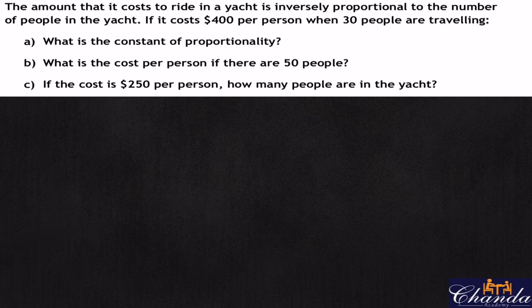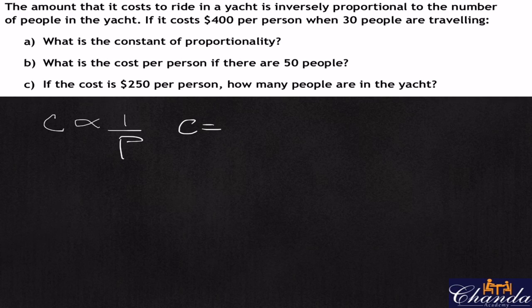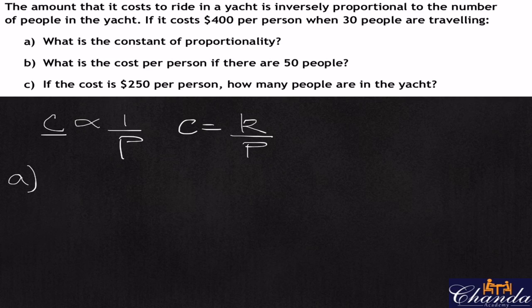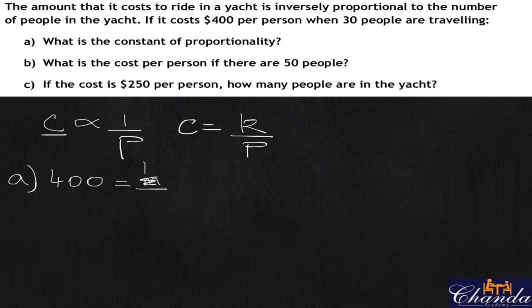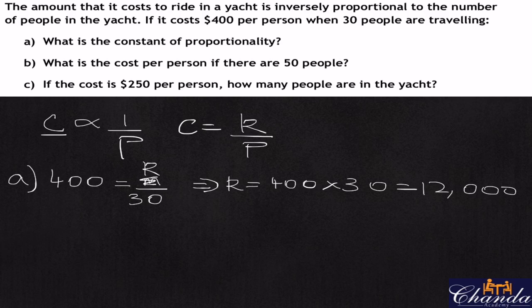The cost is inversely proportional to the number of people, so cost C equals K over P, where K is the constant of proportionality. It costs $400 when 30 people are traveling, so 400 equals K over 30. Therefore K equals 400 times 30, which gives us 12,000. The constant of proportionality is 12,000.